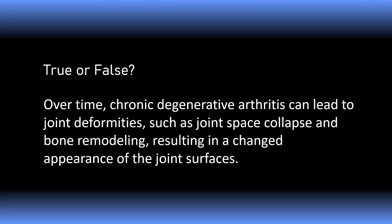True or false: Over time, chronic degenerative arthritis can lead to joint deformities such as joint space collapse and bone remodeling, resulting in a changed appearance of the joint surfaces. This is a true statement.